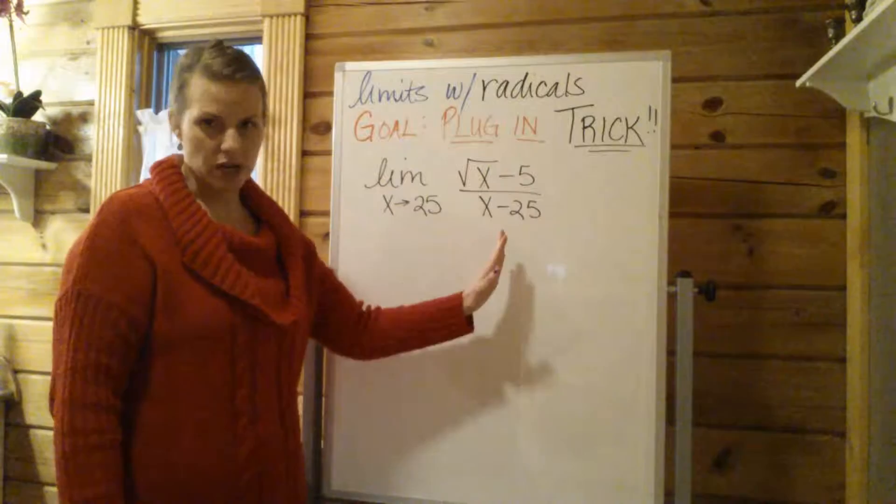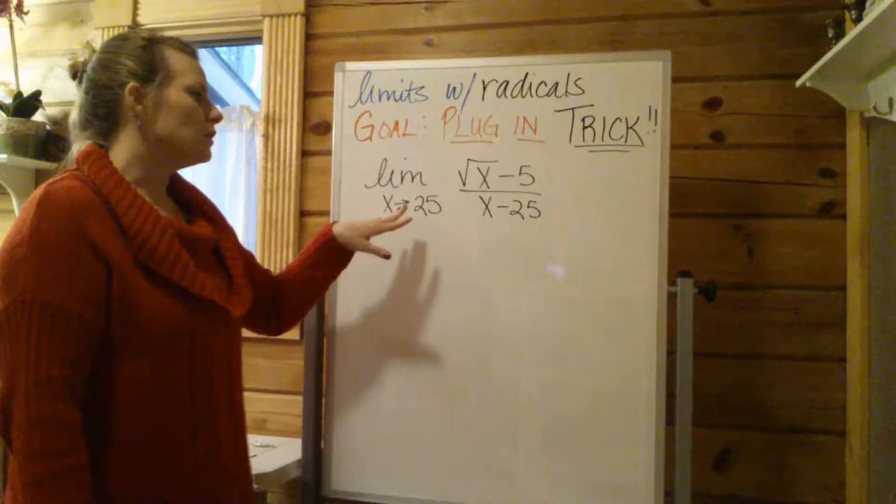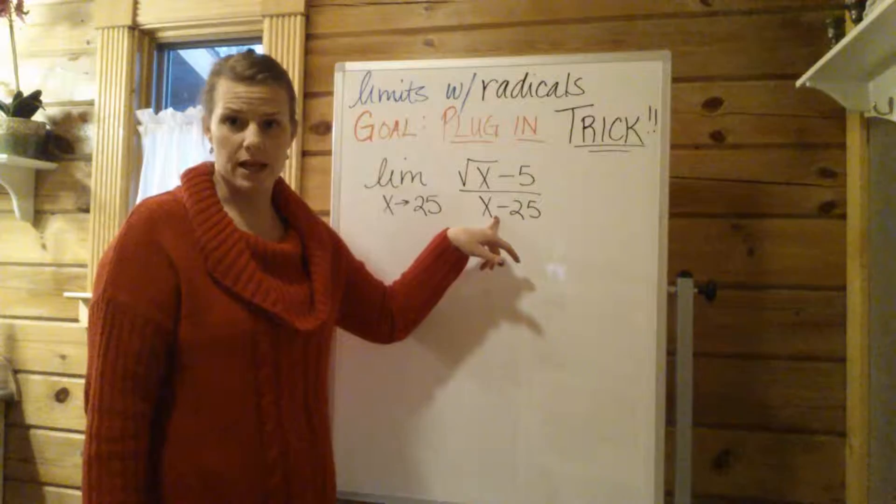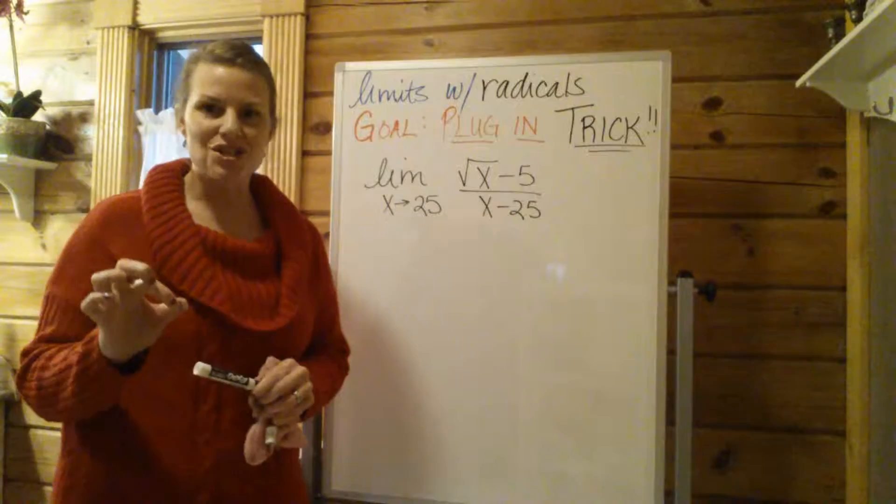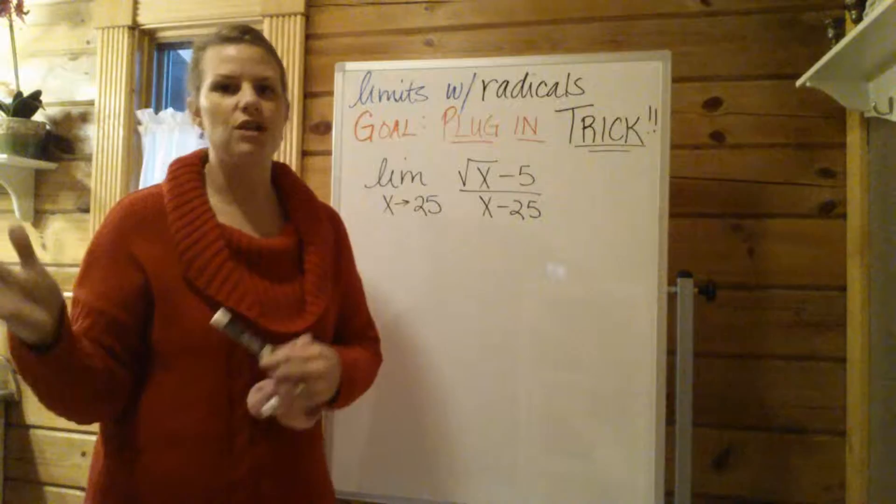Whenever you see this radical in this expression, this is the trick you kind of have to have up your sleeve. Quick glance again, you can see if you plug 25 in right now, you're going to get zero in the denominator. So we got to rewrite this somehow. We can't factor it. There's no way to factor this thing. So your trick whenever you have a radical is always going to involve rationalizing the numerator.